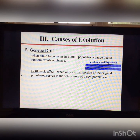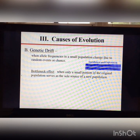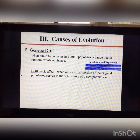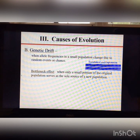Another bottleneck scenario occurs when one dominant male mates with all the females in a population. If this happens over multiple generations, that one male's genes are passed on repeatedly. While he may have good genes, this leads to a lack of genetic variation, which is not good at the species level.